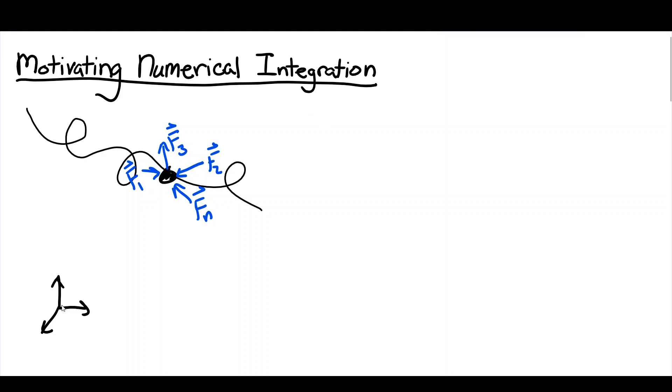The position of this particle at any instance in time can be described by the position vector r of p. This position is relative to a fixed point that I'm calling the origin of the coordinate system.